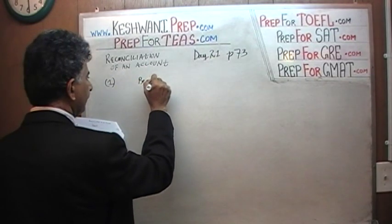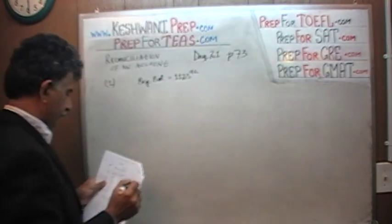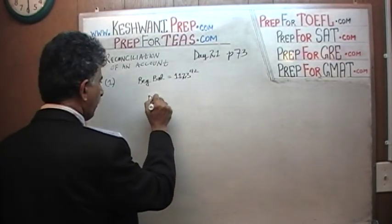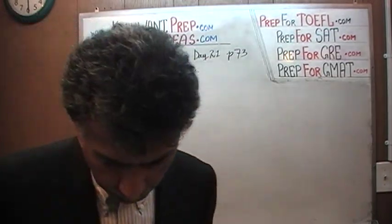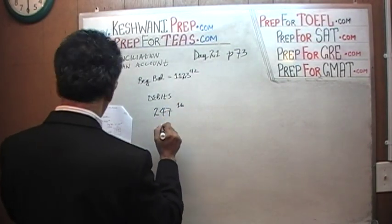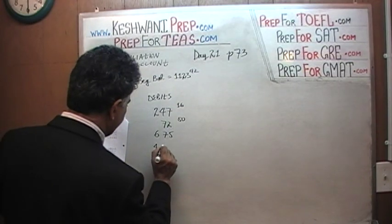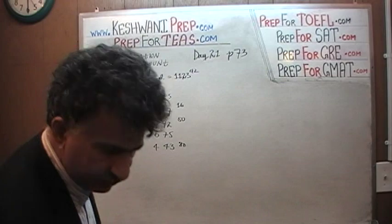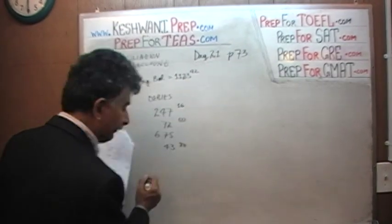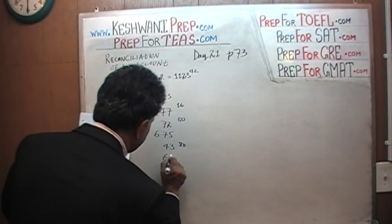We are told that the beginning balance is $1,123.42. As always, we take care of the debits and credits separately. Let's first take care of the debits — the checks that we wrote. We are told that we wrote checks in the following amounts: $247.16, $72.50, $675.43, $43.40. Make sure your digits line up properly — that's the key to not making careless errors. If something ends up in the wrong place, take a second to erase it and redo it. And $64.64. That's it.